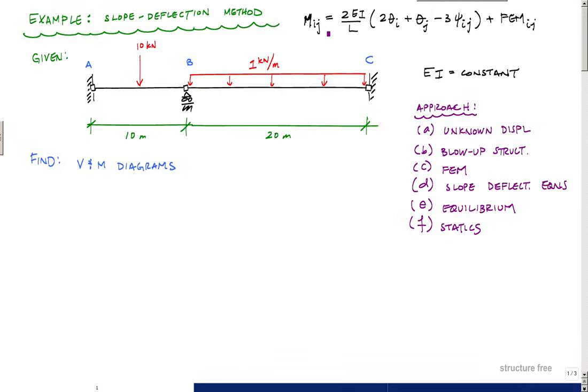Really all that means is near and far. This slope deflection equation is just a moment-rotation relationship plus fixed end moments M_IJ. I'm going to show you how to use that here.